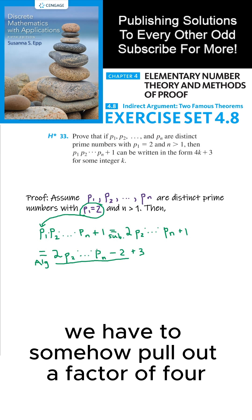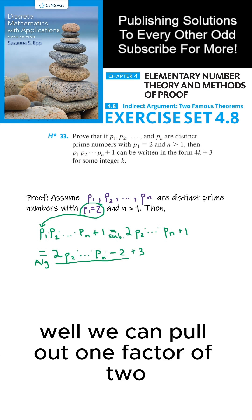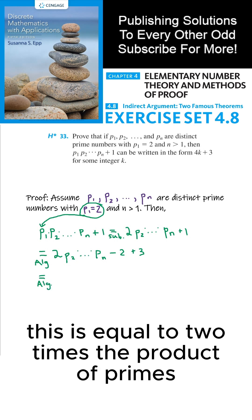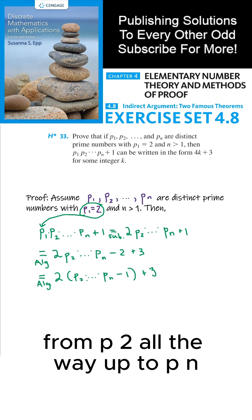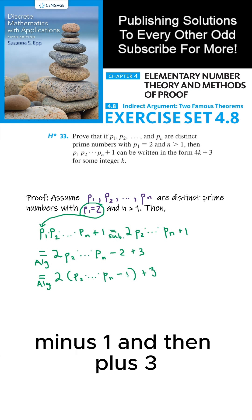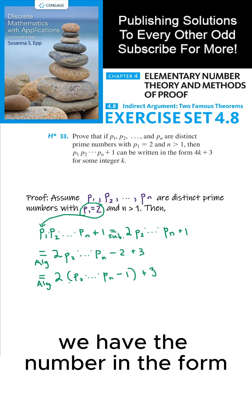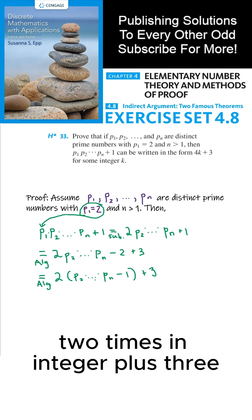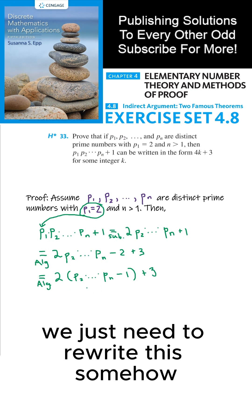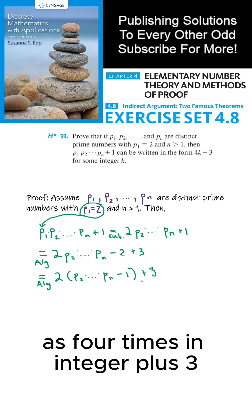We have to somehow pull out a factor of 4. Well, we can pull out one factor of 2, so by algebra, this is equal to 2 times the product of primes from p₂ all the way up to pₙ minus 1, and then plus 3. So now we're closer, we have the number in the form 2 times an integer plus 3, we just need to rewrite this somehow as 4 times an integer plus 3.